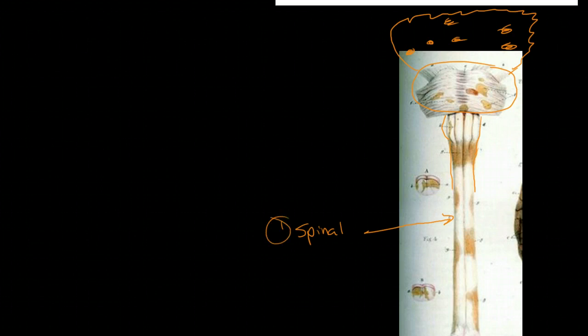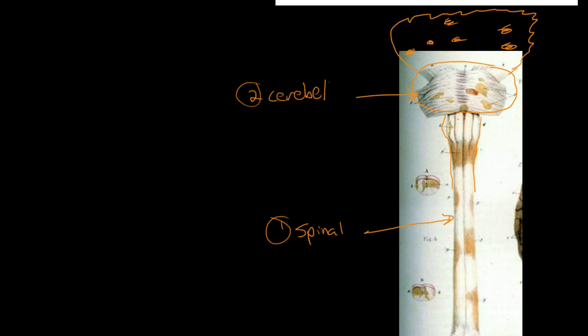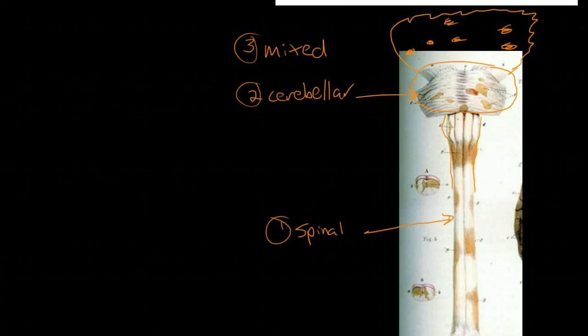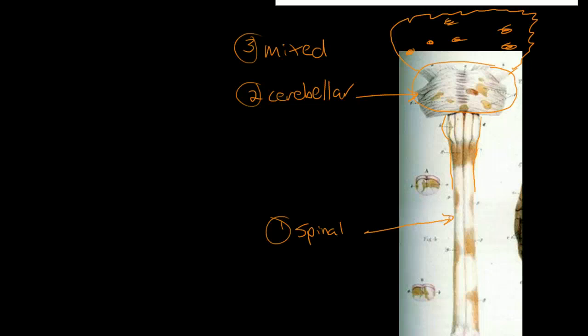So that brings me to the three categories of MS. One is called spinal MS, the second is called cerebellar MS, and then the third is mixed. And the mixed can involve spine, cerebellum, or the cerebral cortex, the thalamus, or the midbrain as well.